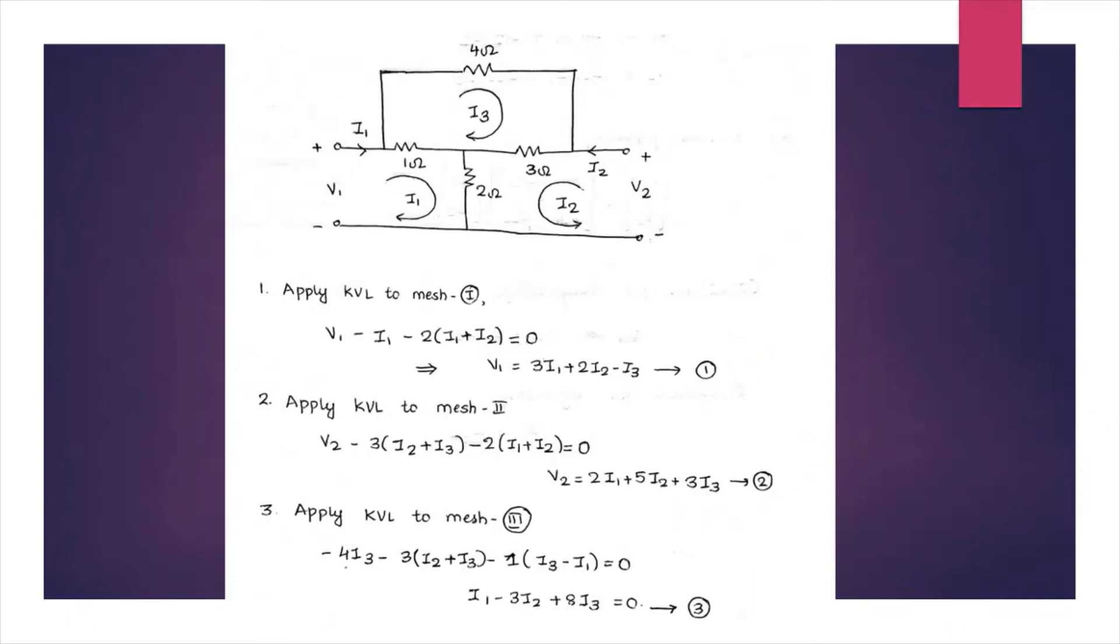For finding Z parameters we need only I1, I2, V1, and V2. So avoid all other currents like I3. So here rearrange equation 3 to get I3.